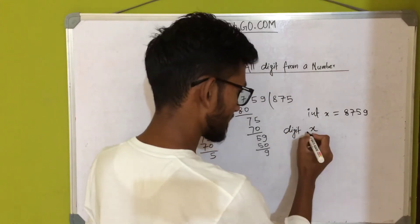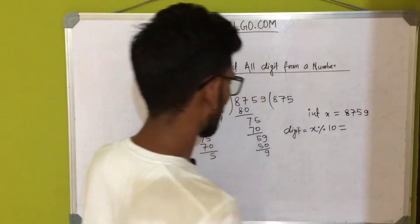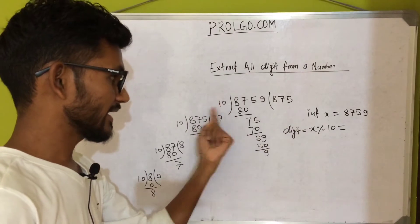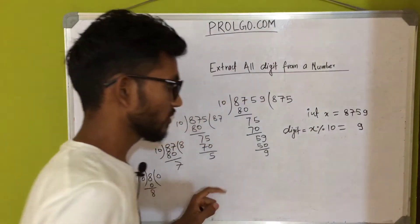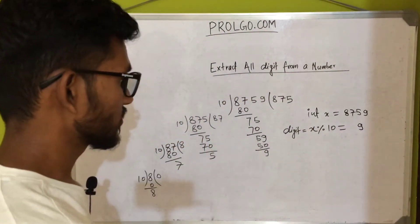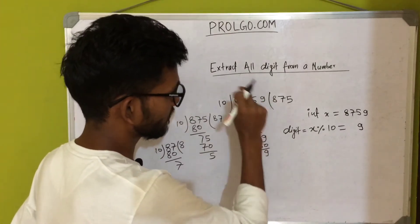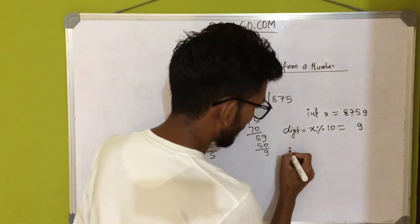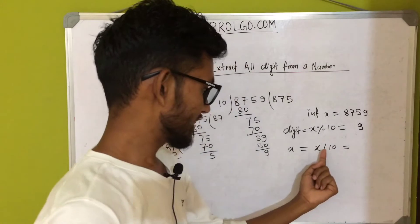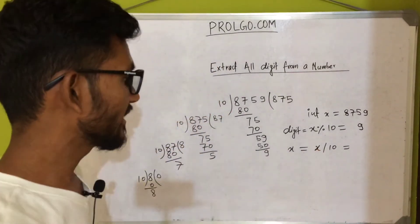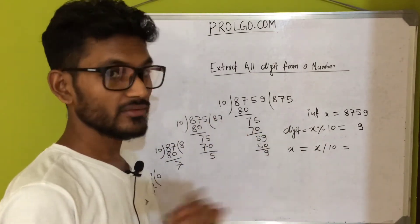I have taken this number 8759 and I'll use one more variable called 'digit'. Using the modulo operator with 10, whatever the remainder is will give us the result as 9 — so we got our first digit. The next step is to remove one digit from the number, so we take x and divide by 10 using the division operator.